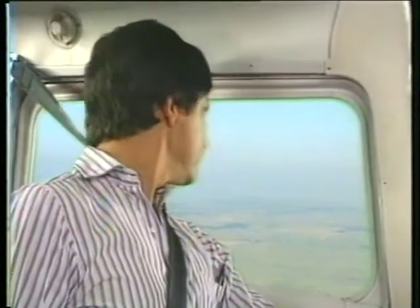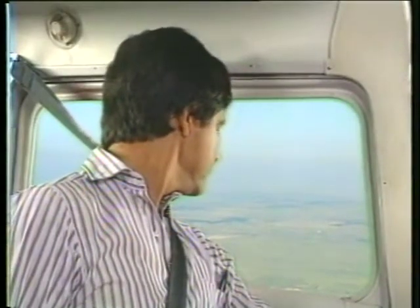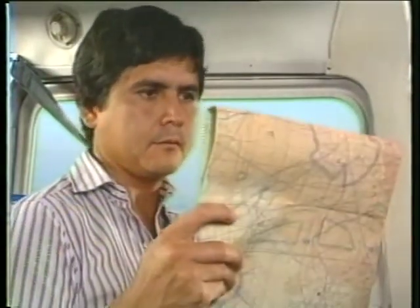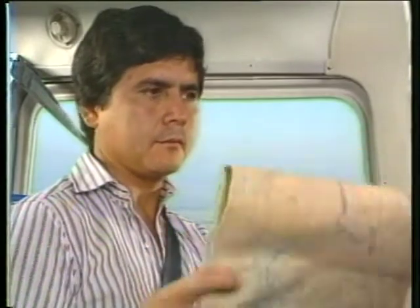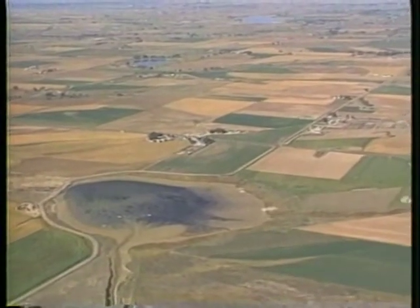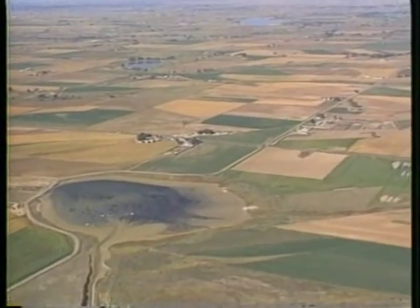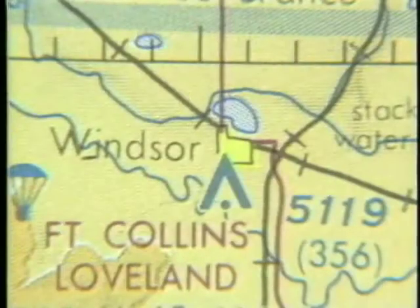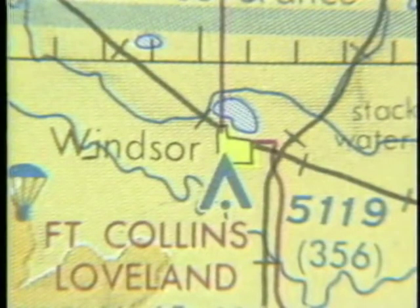The key to pilotage is selecting reference points along your route that are easy to identify from the air. Let's look at some examples. Lines that intersect or that form unusual angles are good checkpoints. When you identify a checkpoint, use more than one feature.